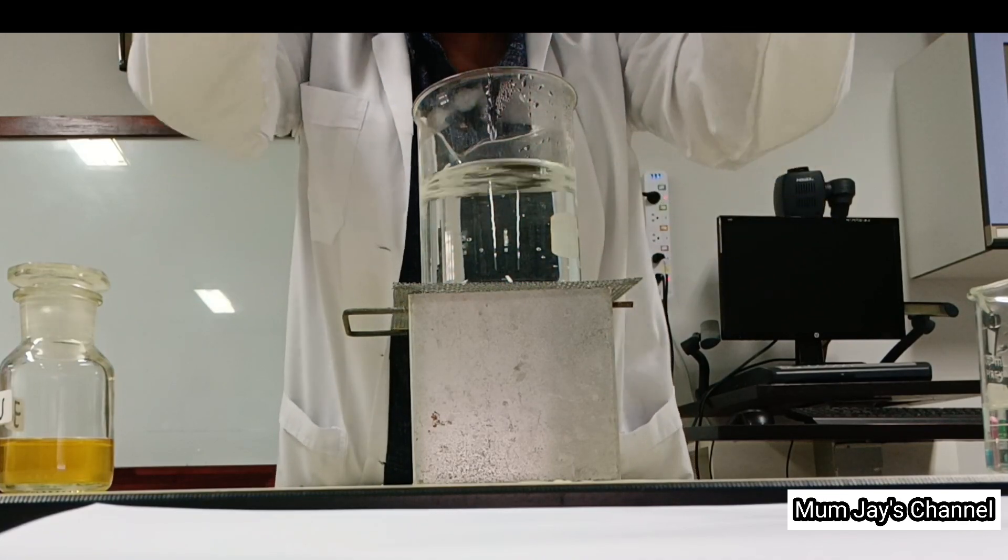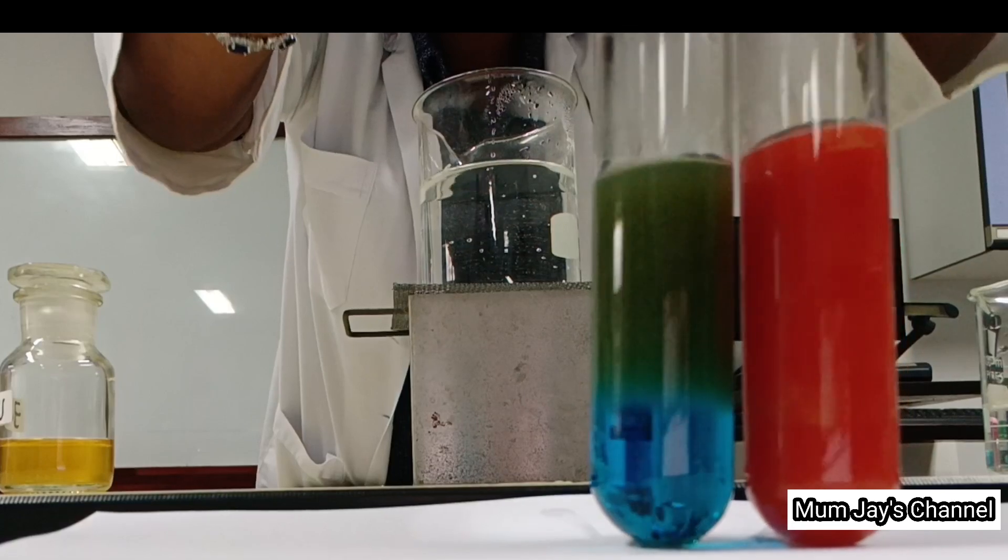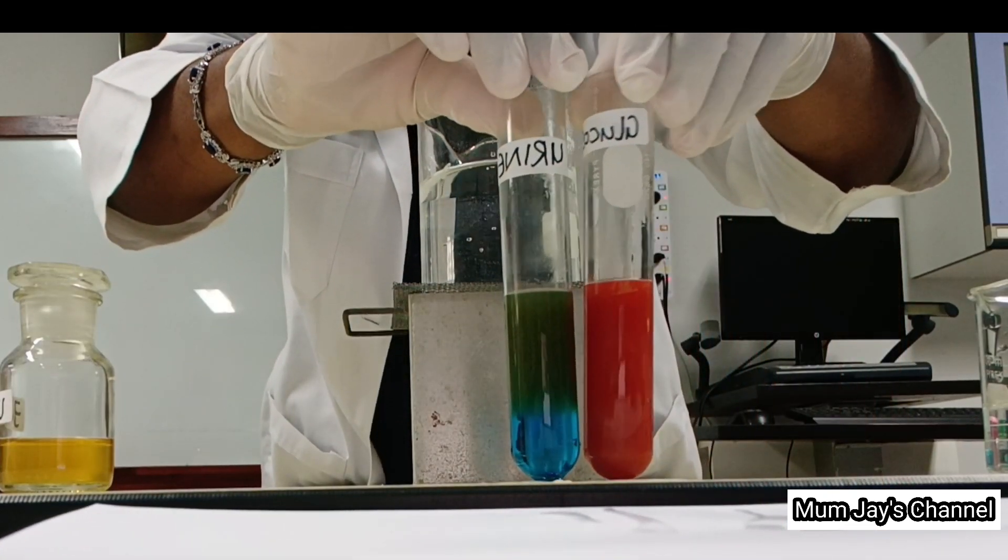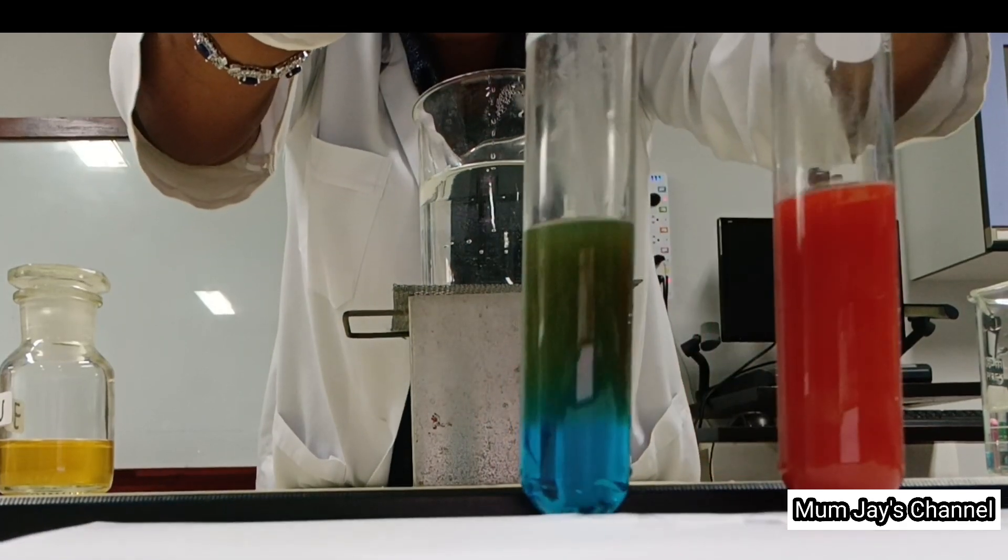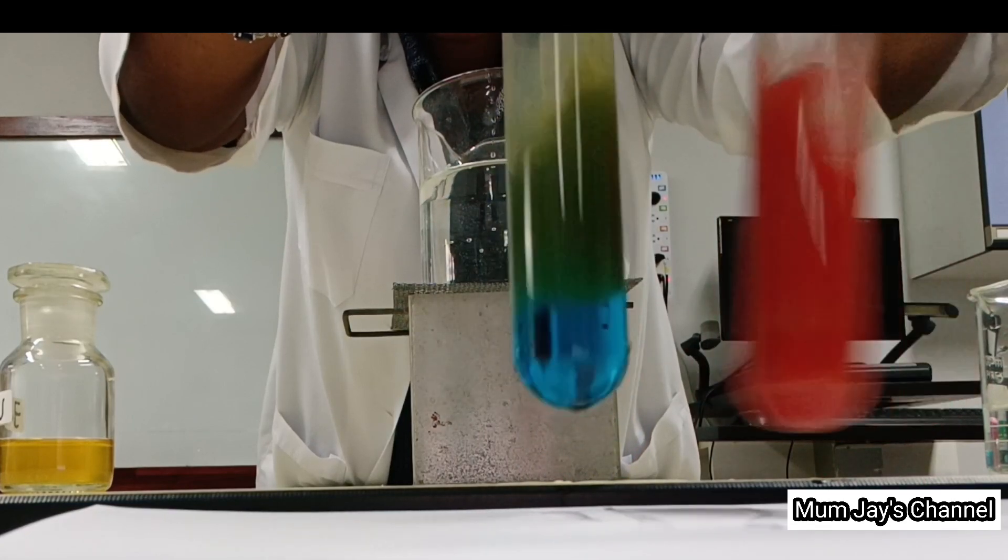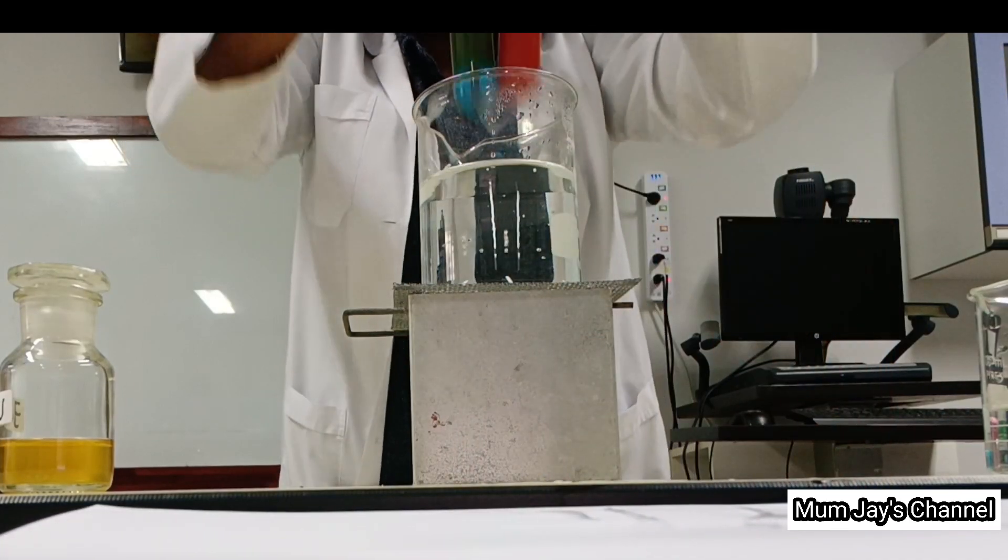Remove from the heat and allow your mixture to cool slowly. A blue color indicates the absence of sugar, while a green color indicates traces of sugar, and the brick red means that there is a lot of sugar present in the sample.